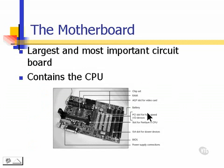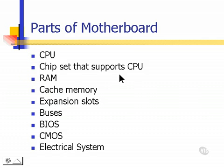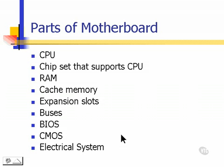The motherboard is the largest and most important circuit board, and also contains the CPU as well as many other pieces — for example, a chip set that supports the CPU, RAM (random access memory), cache memory, expansion slots, buses, BIOS, and CMOS, which are the essential elements to start a computer even without an operating system. The motherboard also contains the electrical system.